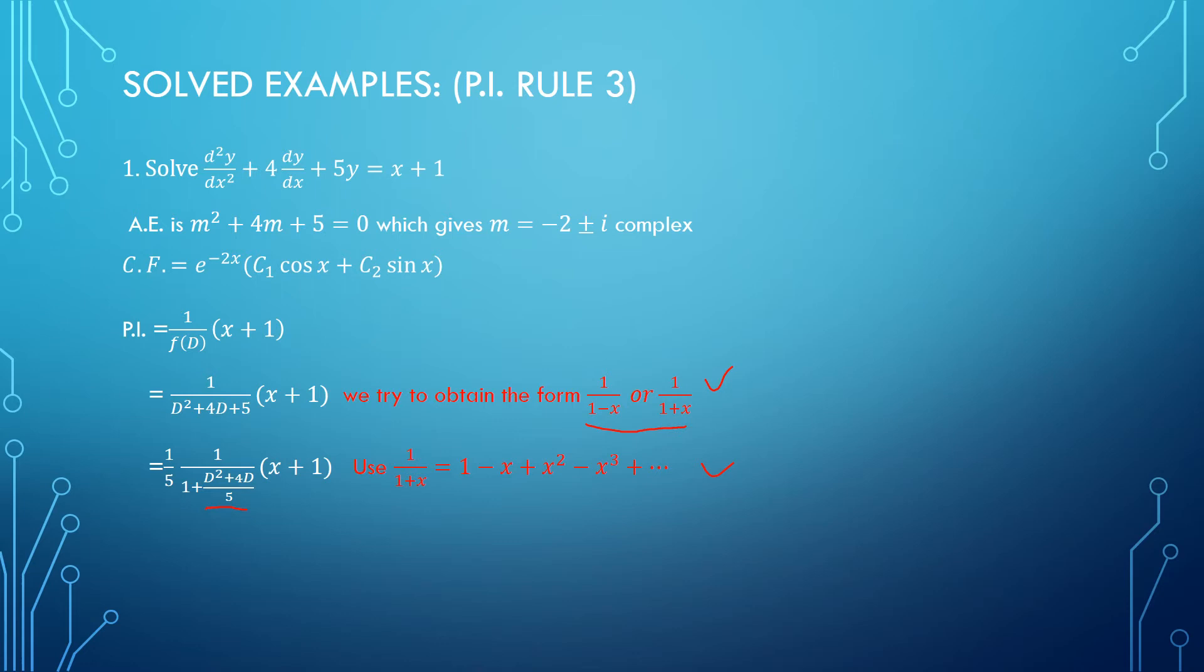Since we are working with an algebraic function, this process has to stop somewhere. If I write the expression, I am getting all powers of the polynomial (d² plus 4d)/5. Since my power of x is 1, d² onwards all derivatives will be 0. So here onwards all terms will be 0 for me, and I need to simplify only the first two terms.